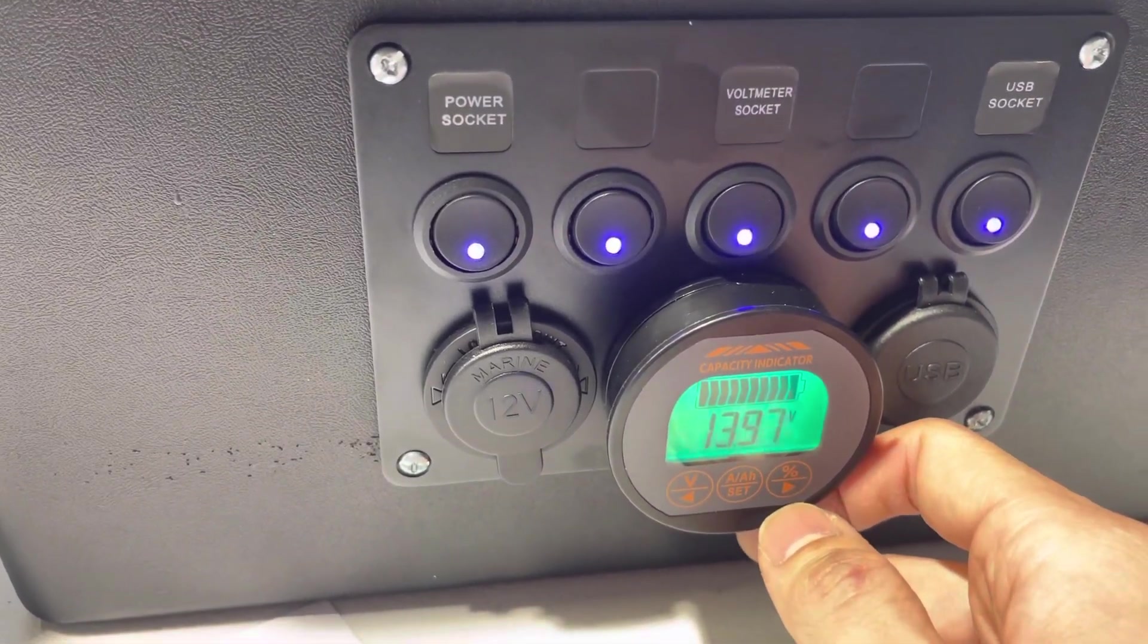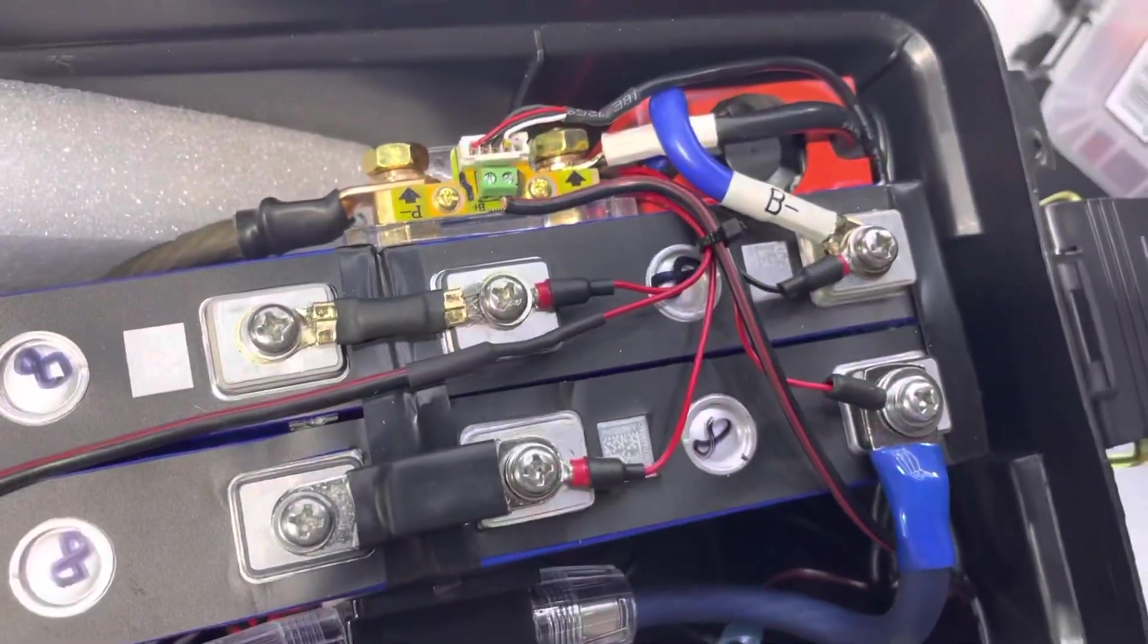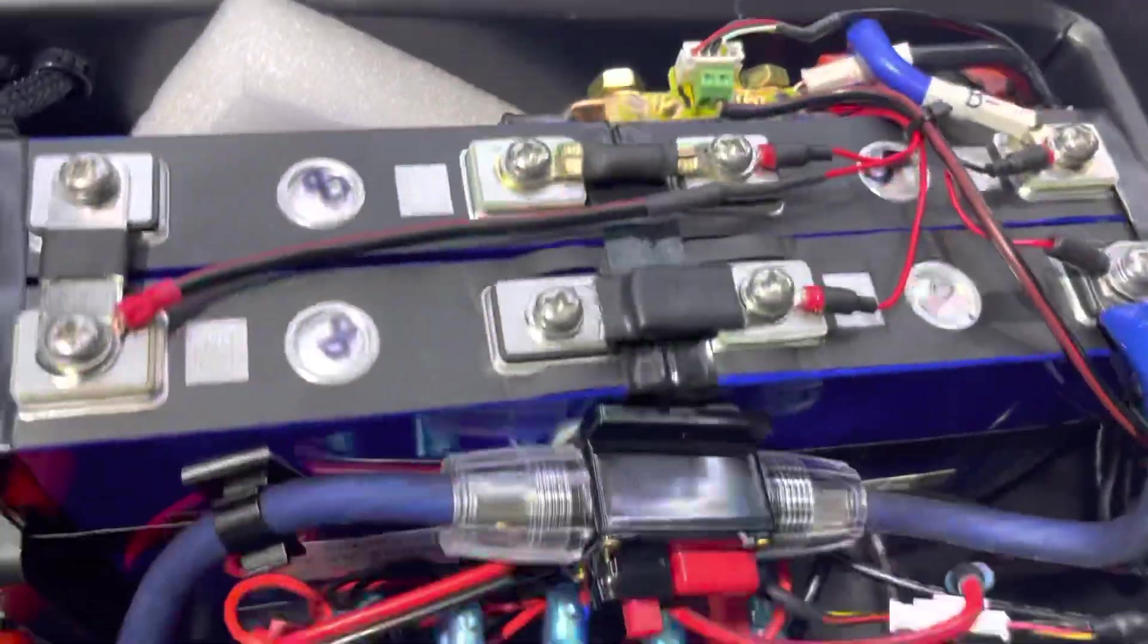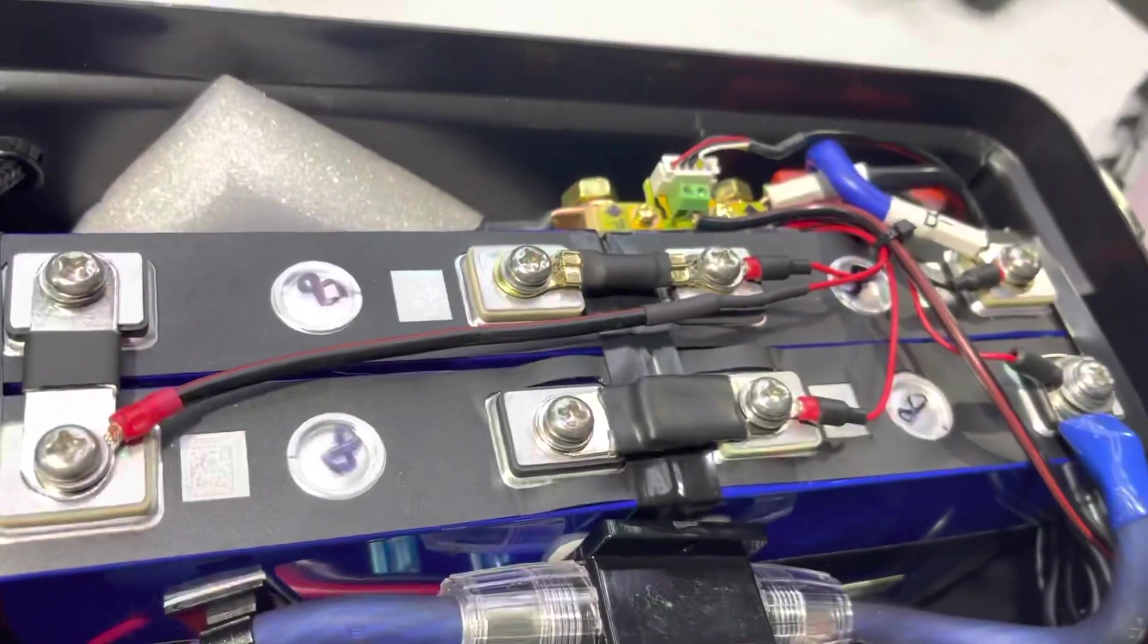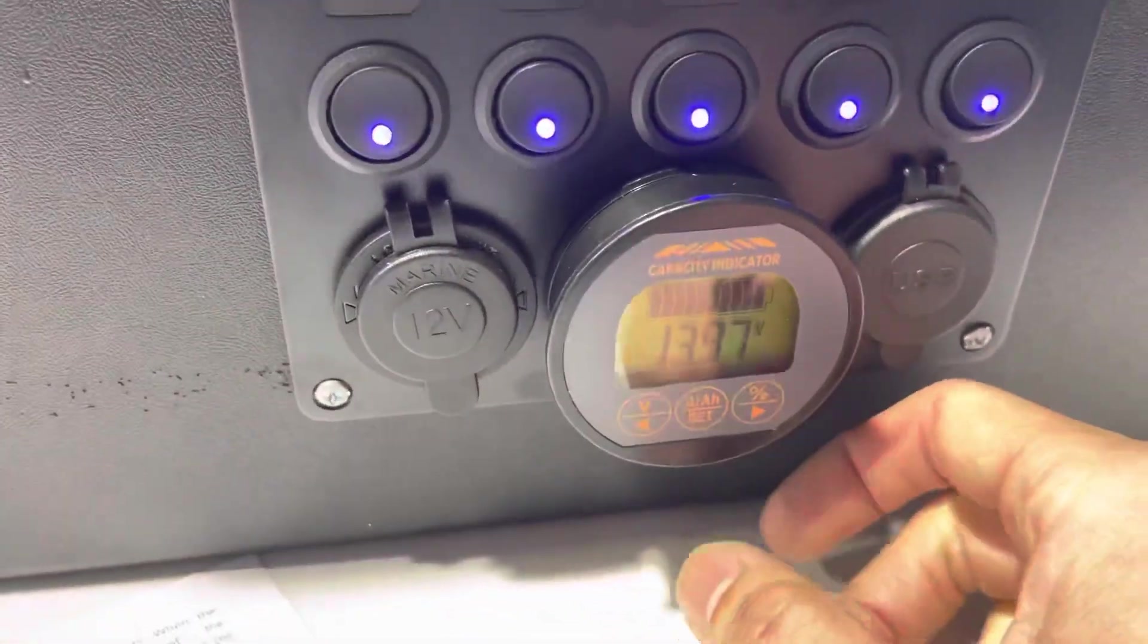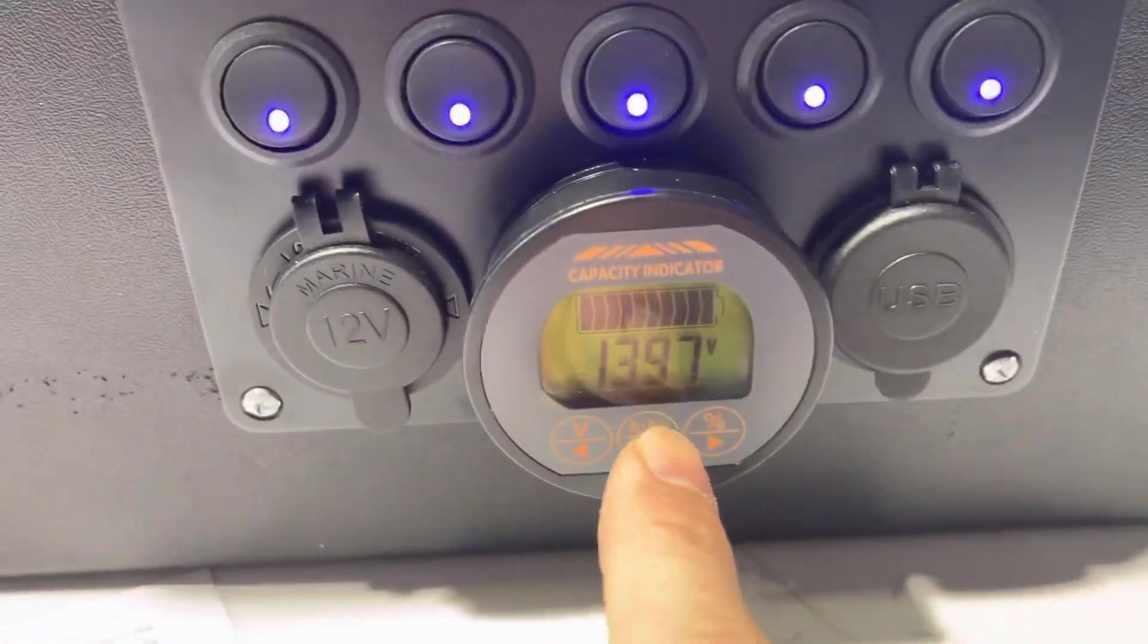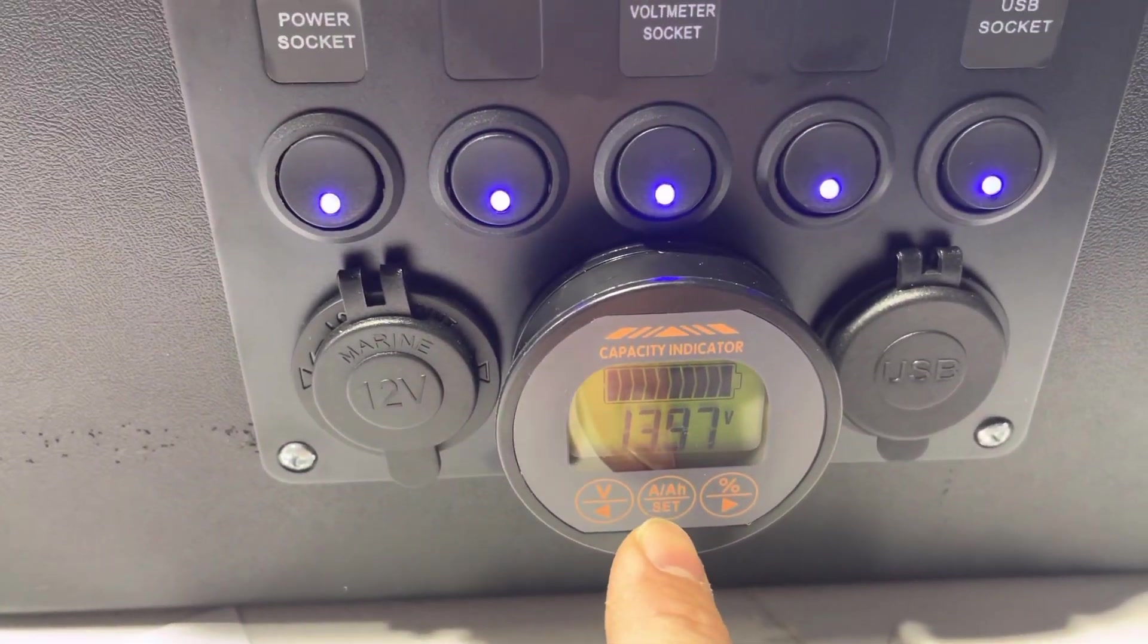You know exactly how much battery you have left on this because it measures it from the ground side, not the voltage side. When you get a voltmeter and you're powering stuff, you're going to have voltage drop, so it's not very accurate.